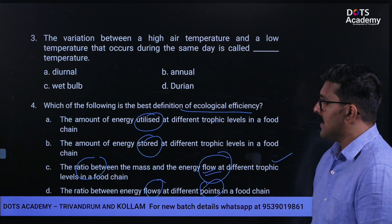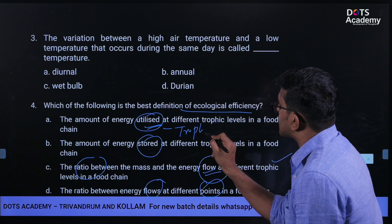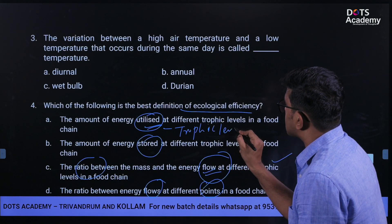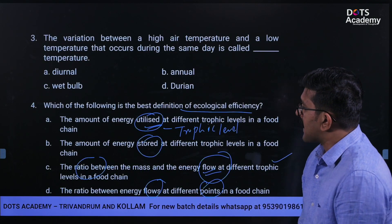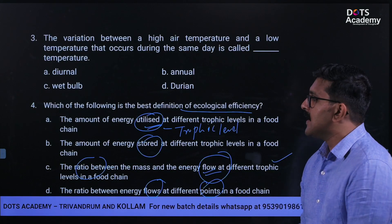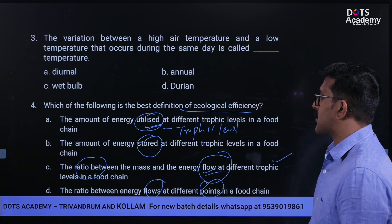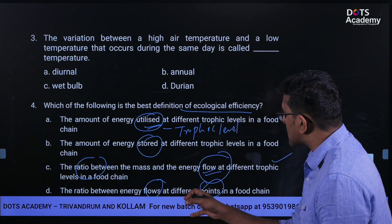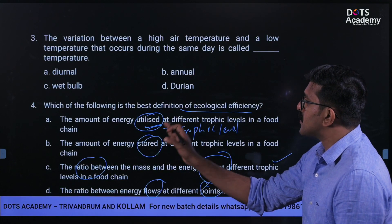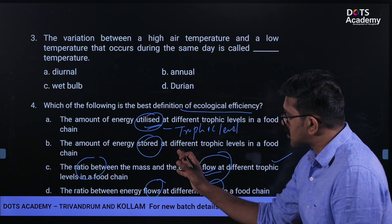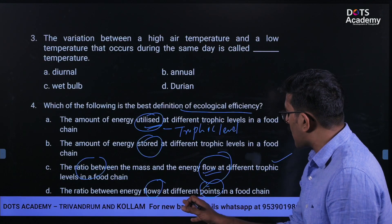Related concepts: The amount of energy utilized at different trophic levels is known as trophic level efficiency. The amount of energy stored at different trophic levels is known as primary productivity and secondary productivity in a food chain. The ratio between energy flows at different points in a food chain is known as trophic level efficiency. These distinguish energy utilized, energy stored, and ratio between mass and energy flow.